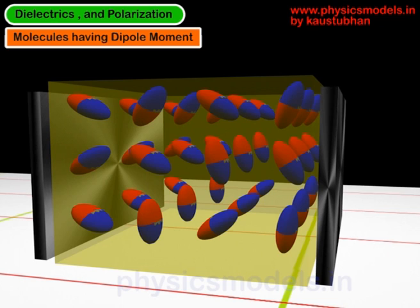Inside the box you can see lots of things which represent molecules, and they are colored red and blue because many molecules of dielectrics have dipoles.